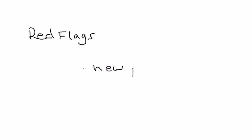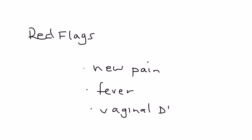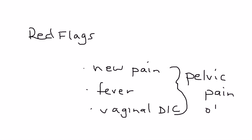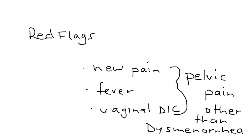For example, if she tells you that this pain is new, it's never happened before, or there's a fever, or there's some sort of vaginal discharge, basically what you're trying to do is rule out any cause of pelvic pain that is other than dysmenorrhea. Because if it's just dysmenorrhea, then you can treat it usually without too much difficulty. But if it's a cause of pelvic pain other than dysmenorrhea, then that needs to be explored.